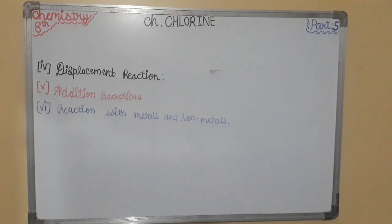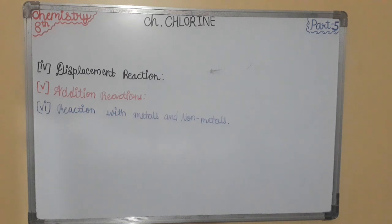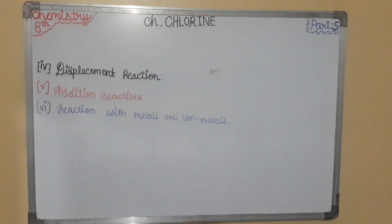The equations are: P4 + 6Cl2 gives 4PCl3, and P4 + 10Cl2 gives 4PCl5. With non-metals, when dry chlorine is bubbled through molten sulfur, sulfur monochloride is formed. With normal metals such as aluminium, zinc, iron, and copper, when heated in a current of chlorine, they form the corresponding chlorides.